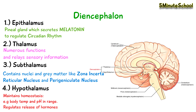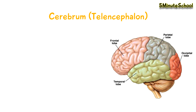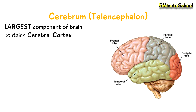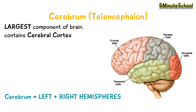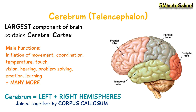Finally, we have the cerebrum, also known as the telencephalon. This is the largest part of the brain and contains the cerebral cortex. The cerebrum consists of left and right hemispheres which are joined together by a structure called the corpus callosum. The main functions of the cerebrum include initiation of movement, coordination, temperature, touch, vision, hearing, problem solving, emotions, and learning — and that's just to name a few.